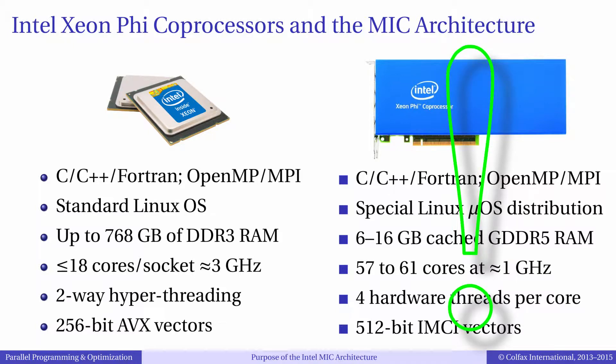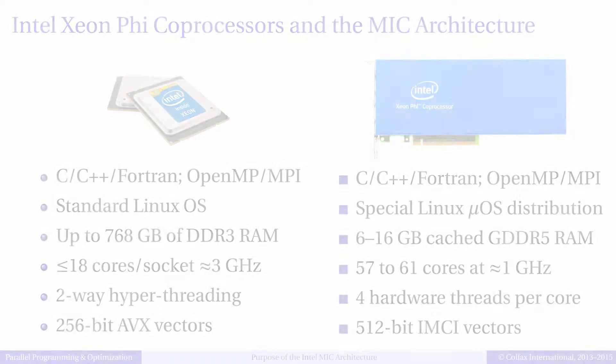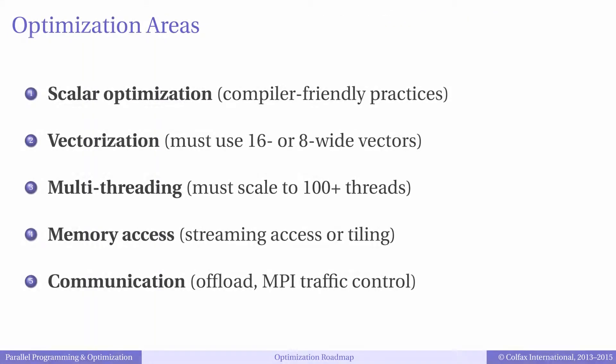On the MIC architecture, the code must be able to utilize wider vectors, support a greater number of threads, and the penalty for non-local memory access is greater. In this course, we offer a systematic approach that can help you ensure that your code expresses the workload in a way that works well on Intel Xeon Phi processors.